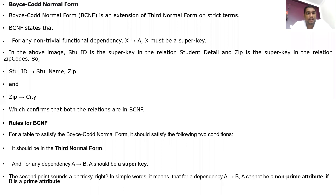Good morning students. In the last class we discussed what is Third Normal Form — if there is a transitive dependency in your relation it has to be eliminated. To recap: First Normal Form deals with atomic values, Second Normal Form eliminates partial dependence, and Third Normal Form eliminates transitive dependency.